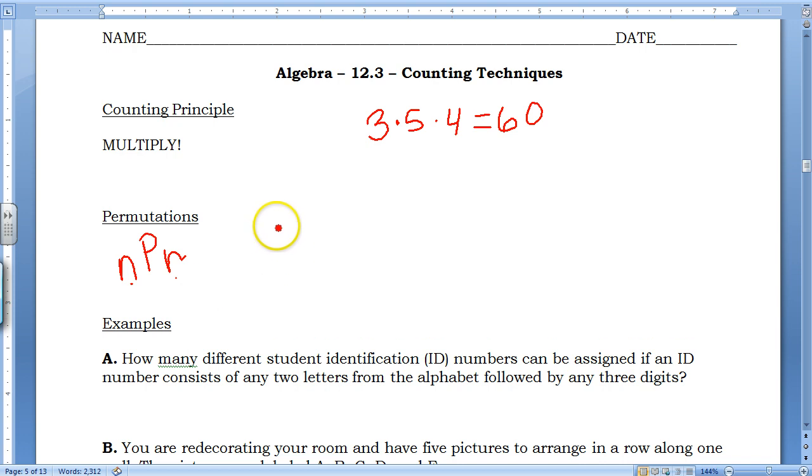So for example, let's say I have ten pictures and I want to put three of those on the wall. I would do ten times nine times eight. You do the number that we have to choose from, how many we're going to put in place, and then we do ten, nine, eight.